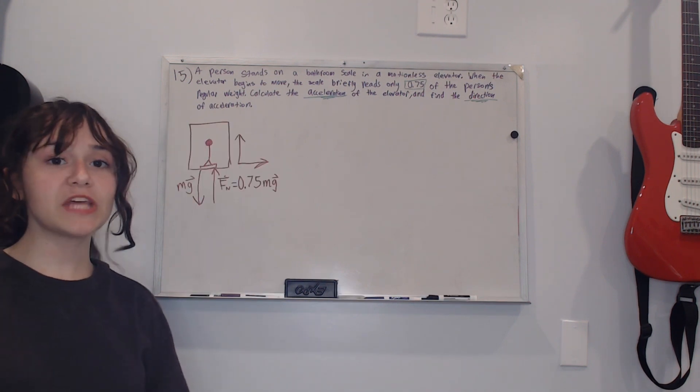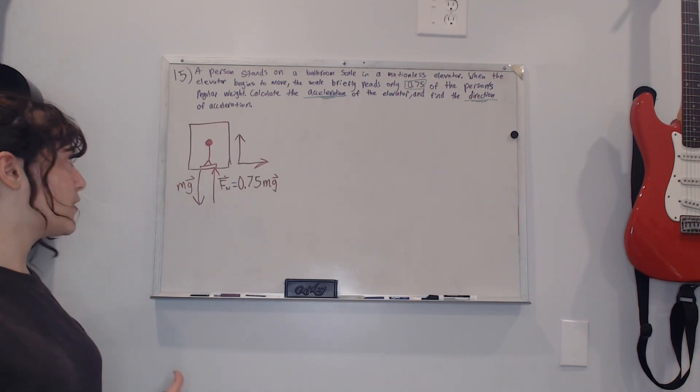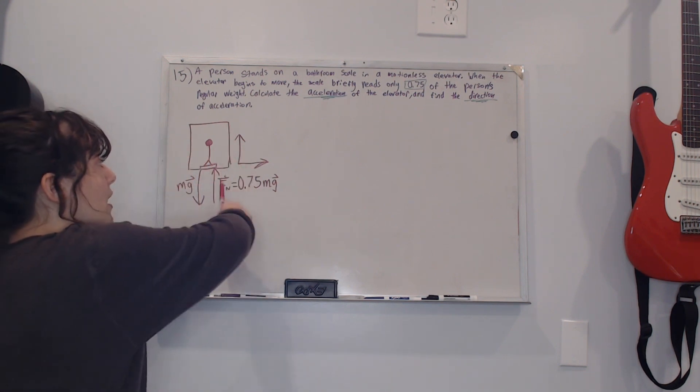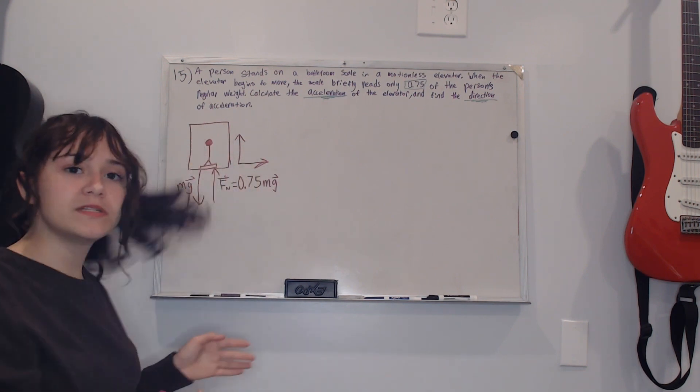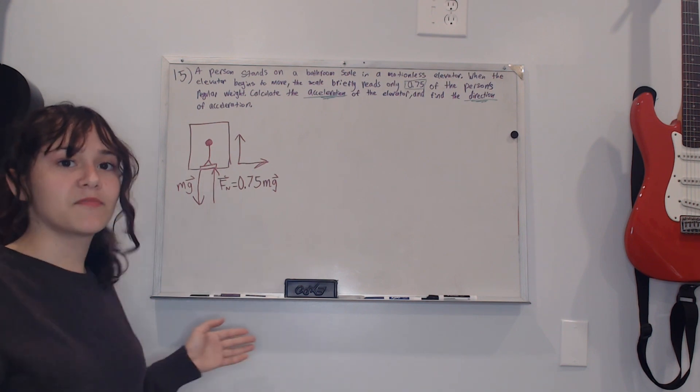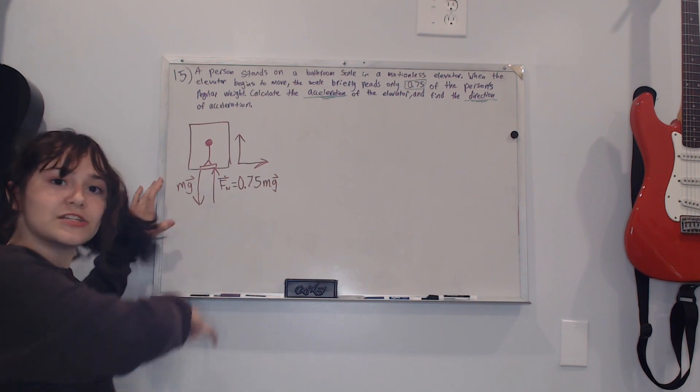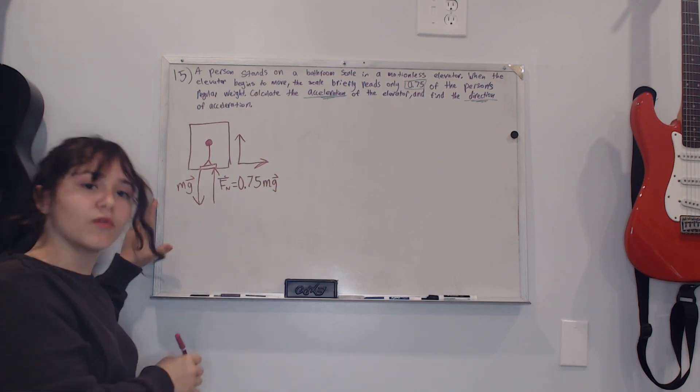Our first step is to sketch out the free body diagram and I put the person with the weight sitting on the scale inside the elevator, and with the axes because we always need our axes in this type of problem. I wrote mg which is the center of mass and the normal force.